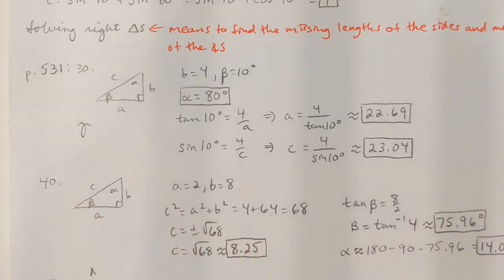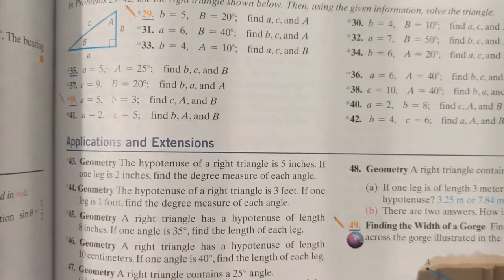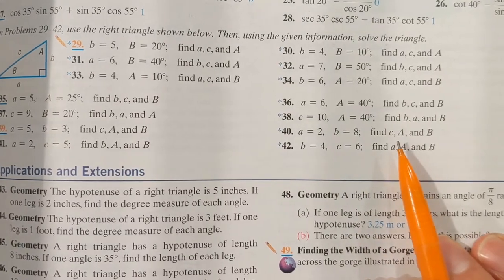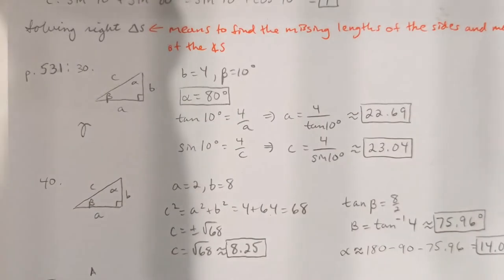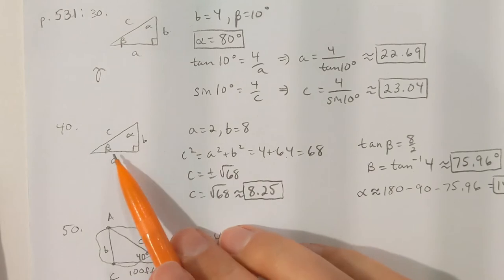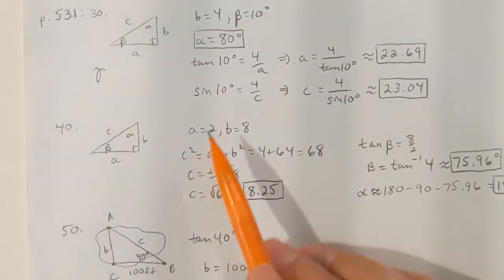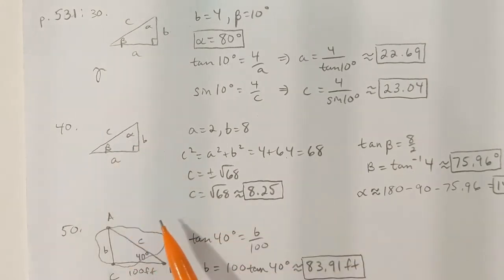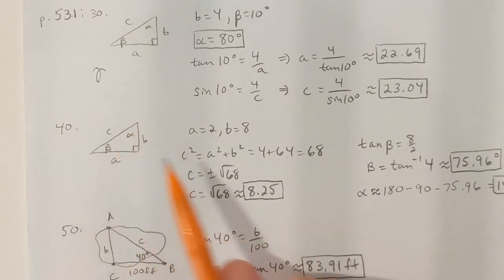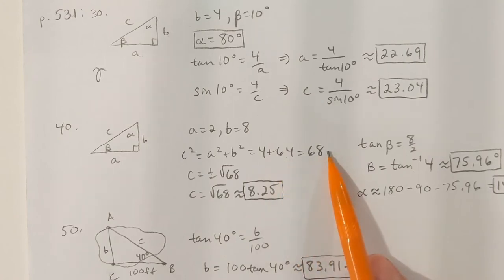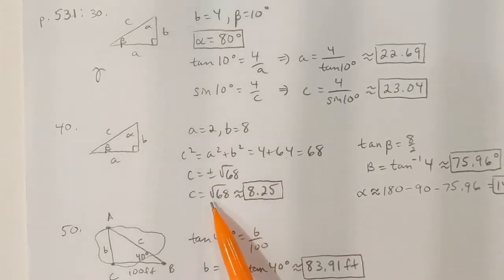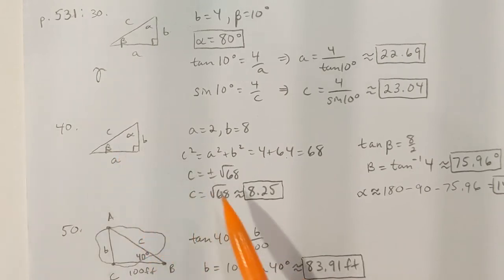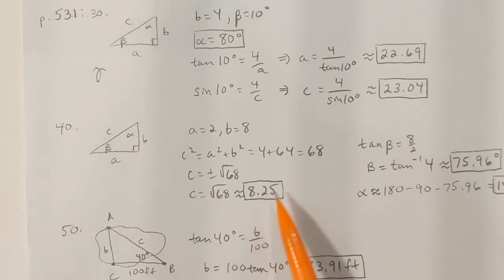Problem 40: we have a right triangle where a = 2, b = 8, and we want to find side c and angles alpha and beta. Since it's a right triangle, I can use the Pythagorean theorem: a² + b² = c². So 2² + 8² = 4 + 64 = 68, giving c² = 68. Taking the square root — ignoring the negative since we're talking about distance — c is approximately 8.25.